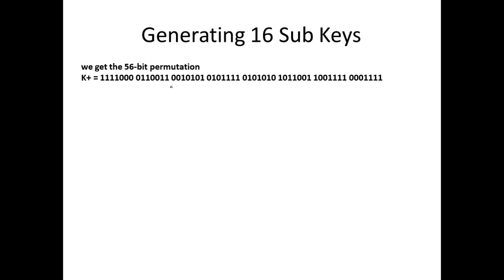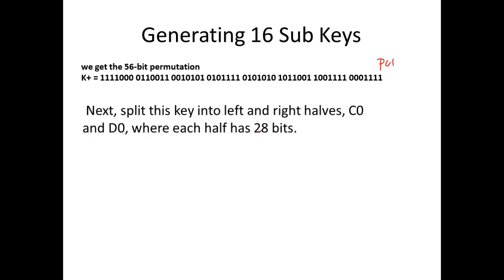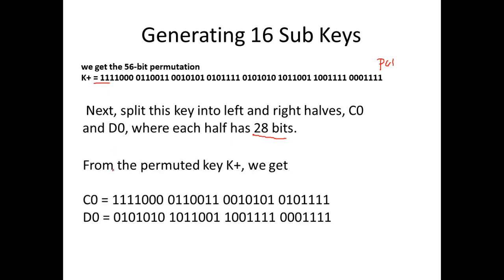The next step: we take this 56-bit key attained from PC1 and split it into two halves, each having 28 bits. We take K+ and split it as C0 and D0 — the first 28 bits will be C0 and the next 28 bits will be D0. We know the size of this key is 56 bits, so we are just dividing it into two equal halves.